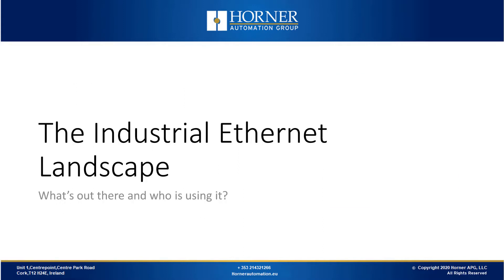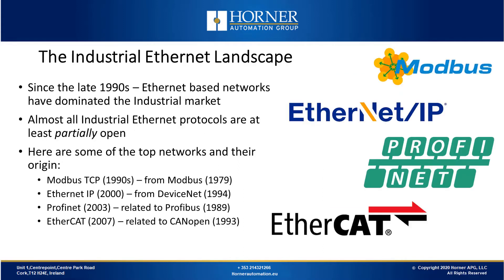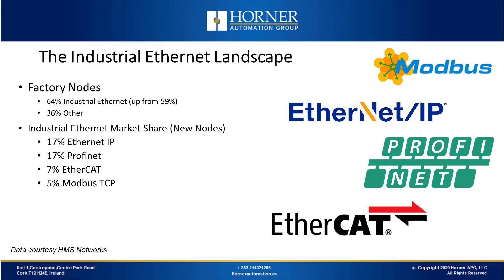Let's take a look at the industrial Ethernet landscape. Ethernet-based networks have dominated the industrial market since the late 90s. There are many industrial Ethernet protocols and most of them are at least partially open. Some of the most common networks today are Modbus TCP, Profinet, EtherCAT and Ethernet IP. 64% of factory nodes are currently based around industrial Ethernet, and if you look at the market share, 17% of it is Ethernet IP, which is our focus for today.